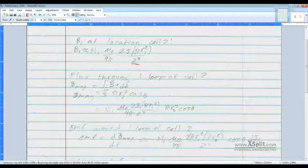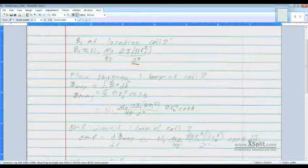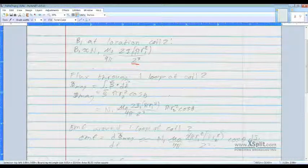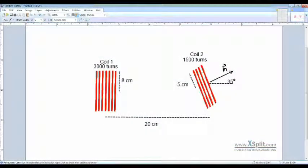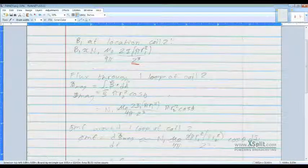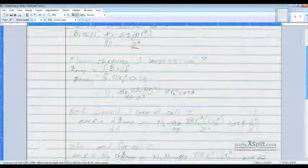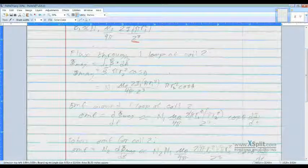So B is constant. The area is a circle, it's a coil, so pi R2 squared. And we can't ignore the cosine of theta for this one because the coil is at a 35 degree angle. So that's a little different than a lot of the ones we'll typically work.